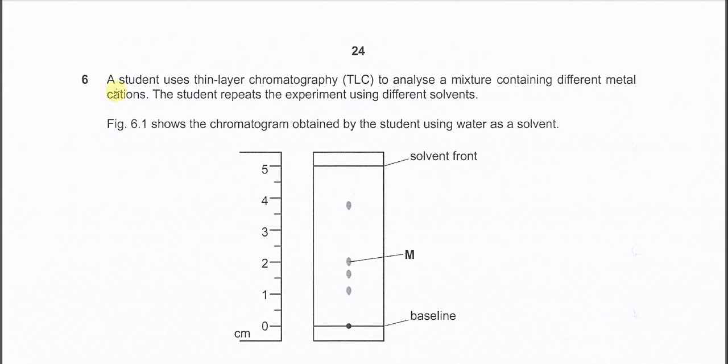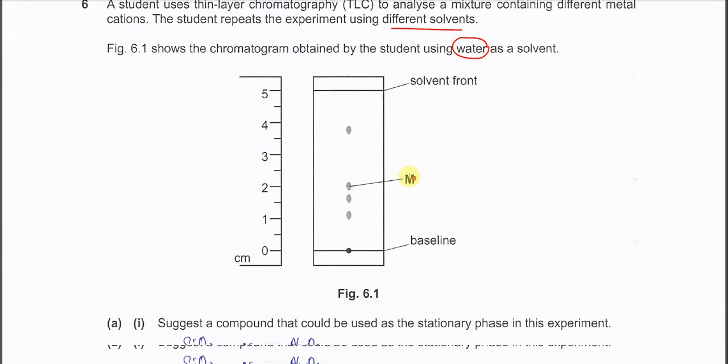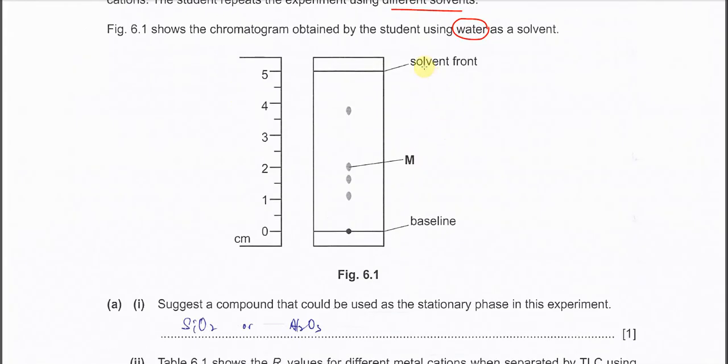Question 6. A student used thin layer chromatography to analyze the mixture containing different metal cations and the student repeats the experiment using different solvents. This figure 6.1 is the chromatogram shown when the student uses water as a solvent. The solvent front distance is from 0 to 5 cm, with different spots that they will discuss.